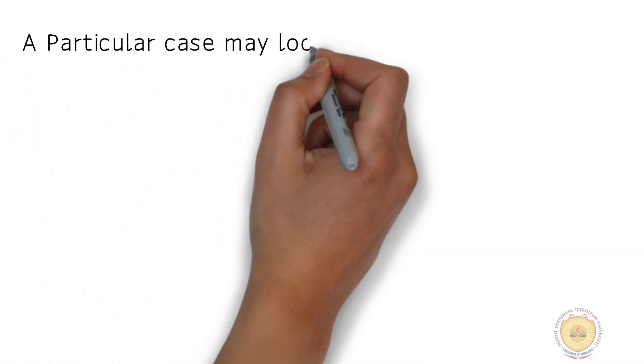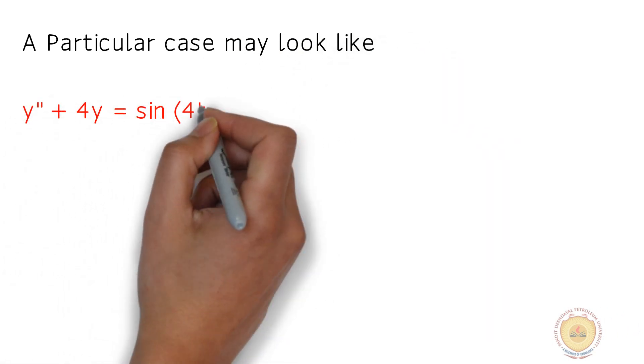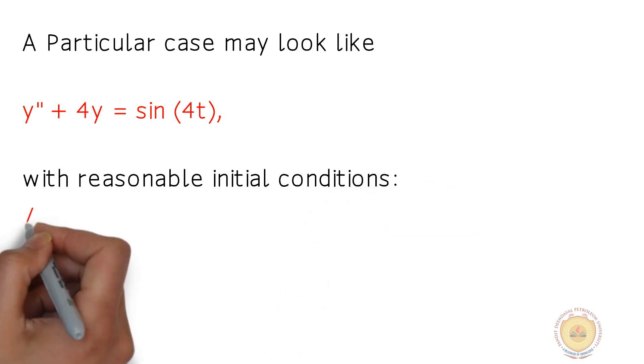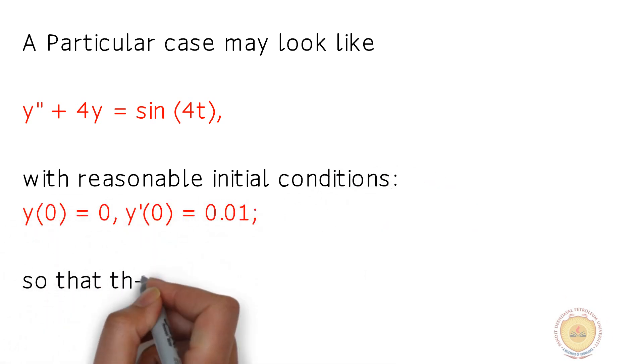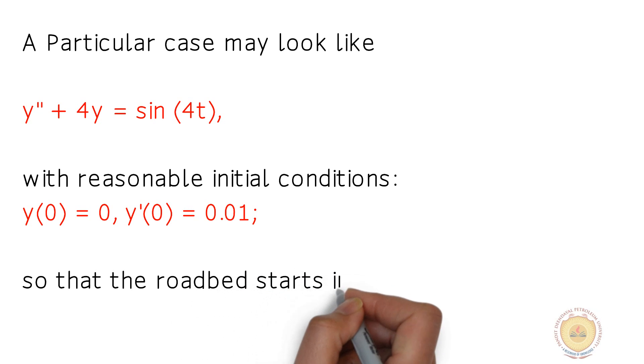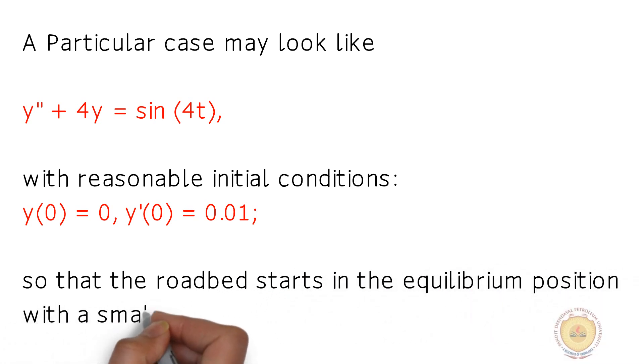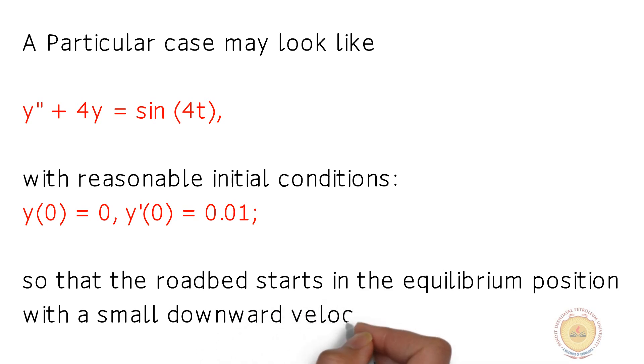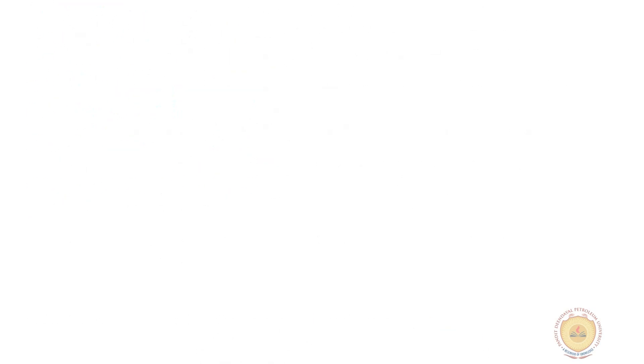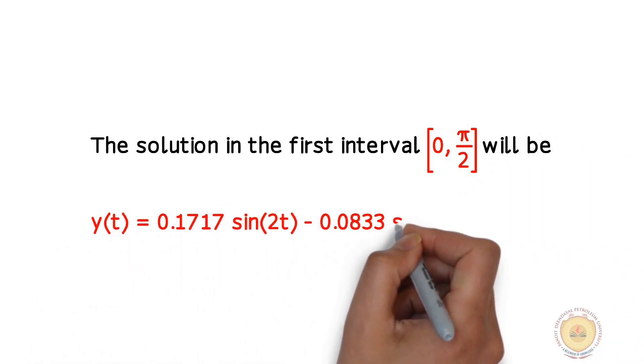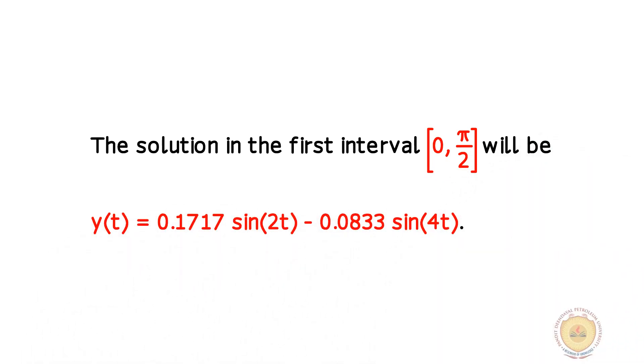A particular case may look like y'' + 4y = sin(40t) with reasonable initial conditions y(0) = 0, y'(0) = 0.01 so that the roadbed starts in the equilibrium position with a small downward velocity. The solution in the first interval 0 to π/2 will be looking like the given expression.